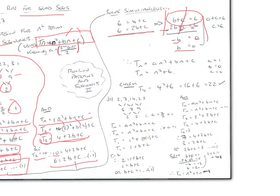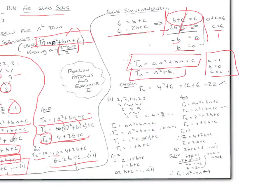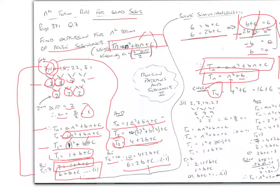Substituting B = 0 into B + C = 6 gives C = 6. With A = 1, B = 0, C = 6, the nth term rule is Tn = n² + 6. We verify: T4 = 4² + 6 = 22, which matches the fourth term in the original sequence.